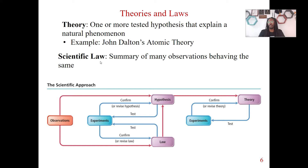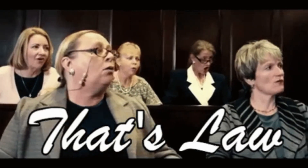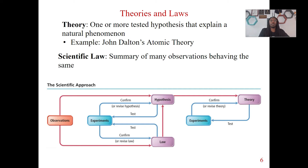To compare that, we also have what we call scientific law. A scientific law is basically a summary of many observations behaving the same. We see many observations, and every time we see this, it's always going to happen — it's like repetition. Like gravity, for instance: if I drop my phone, it's going to fall. That's gravity, and that's law. It's the summary of many observations behaving the same.